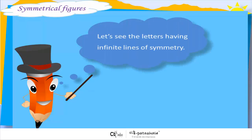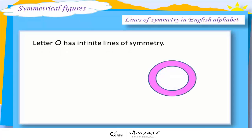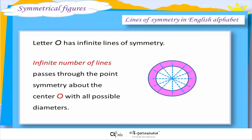Let us see the letters having infinite lines of symmetry. Letter O has infinite lines of symmetry. Infinite number of lines pass through the point symmetry about the center O with all possible diameters.